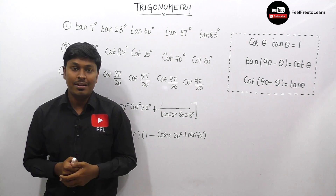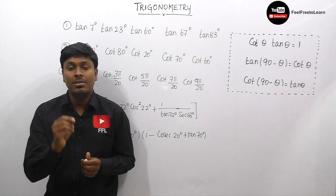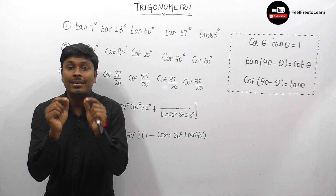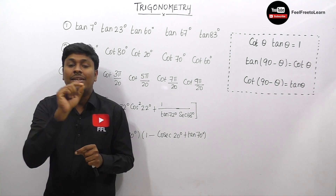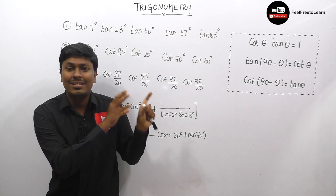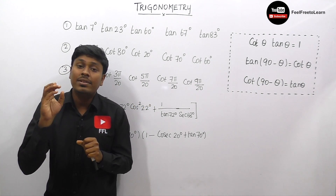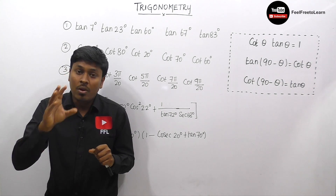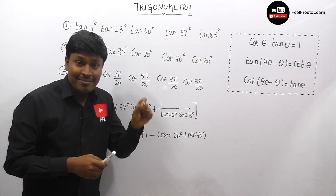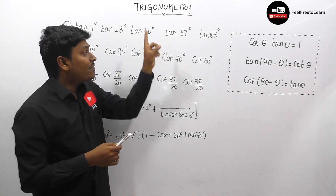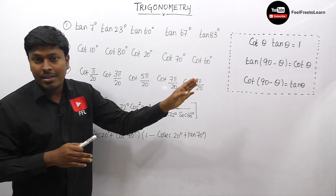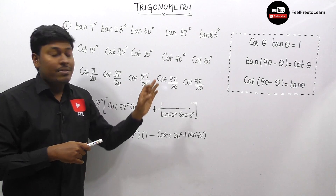Thanks for being here in my YouTube channel. Today we are going to cover one of the important concepts in trigonometry. We are going to solve five different questions using only three basic trigonometrical formulas: cot θ · tan θ = 1, cot(90° − θ) = tan θ, and tan(90° − θ) = cot θ.